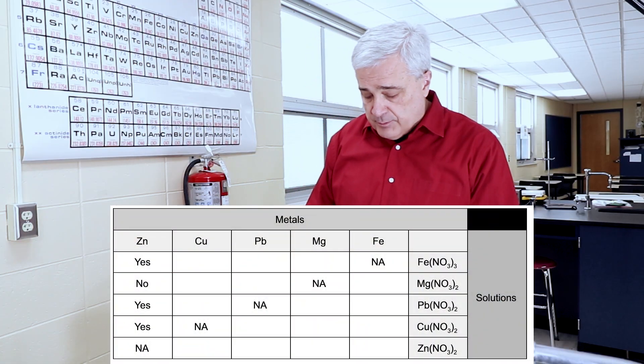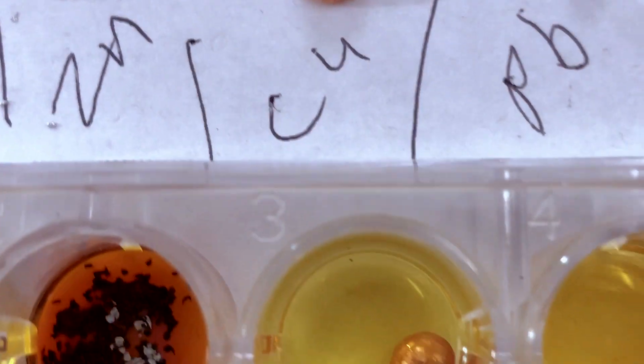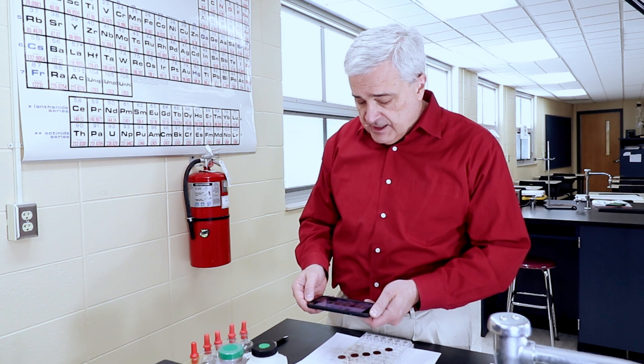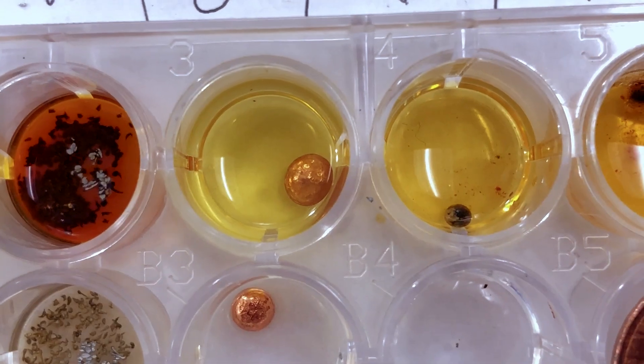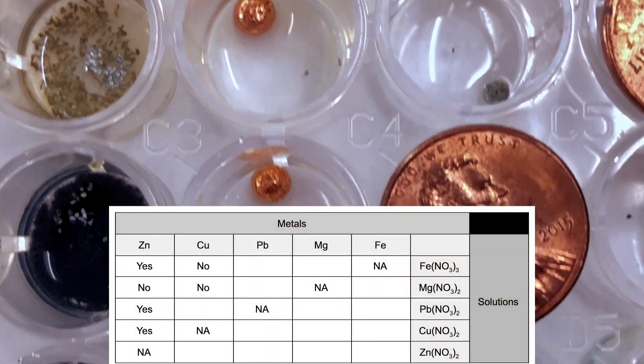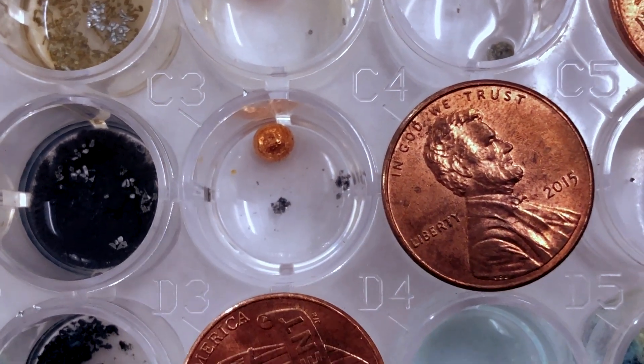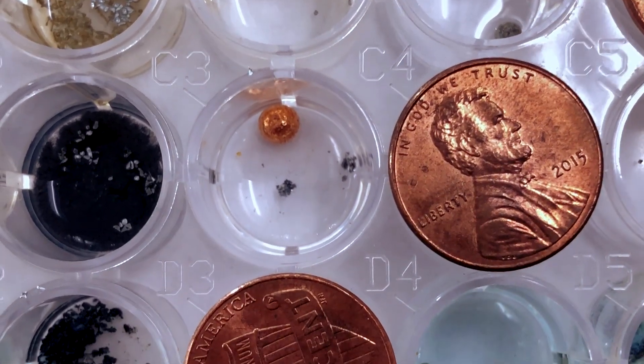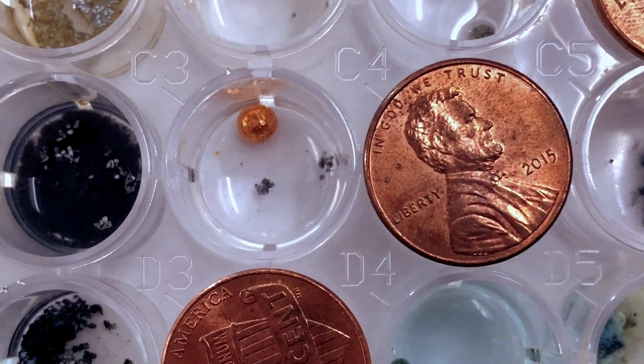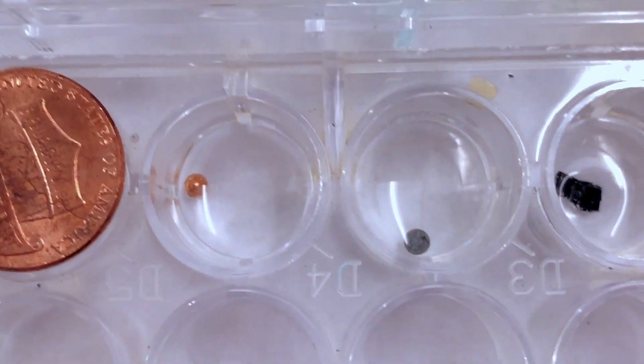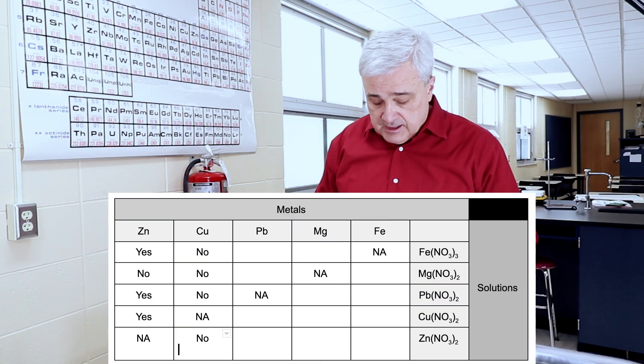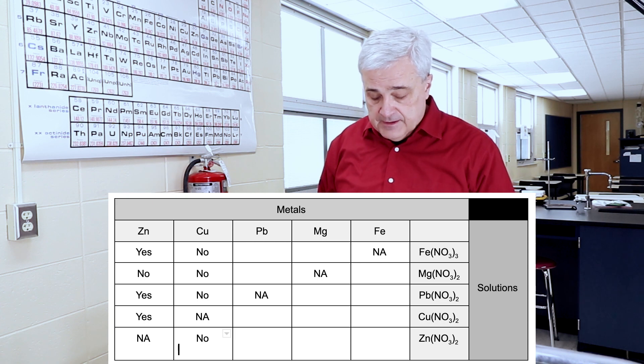So now let's take a look at copper. This is what the copper looked like when we put it in. Copper with the iron solution, there seems to be no change. Copper in the magnesium solution, no change. Copper with lead did not change. The copper is unchanged. The solution is unchanged. And then the copper with the zinc also unchanged. So the copper did not take the place of anything in that list.